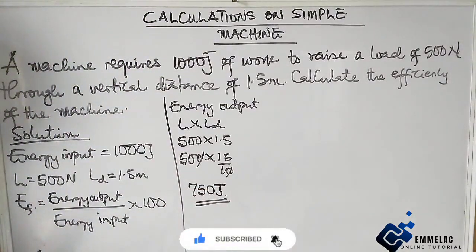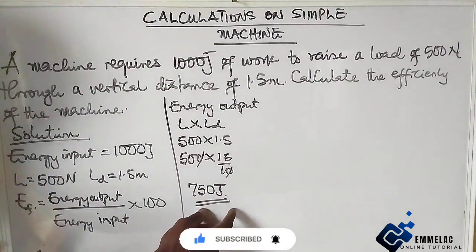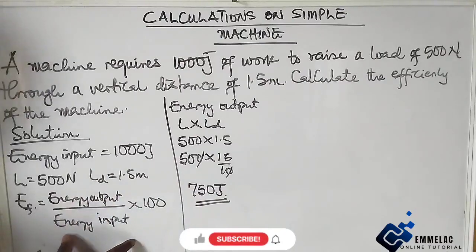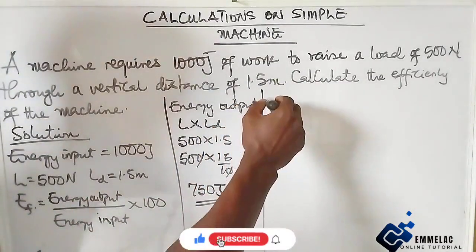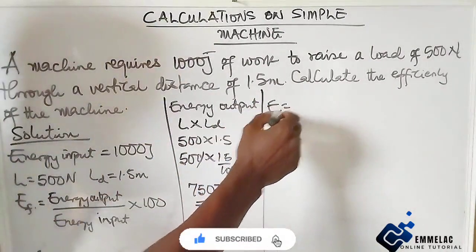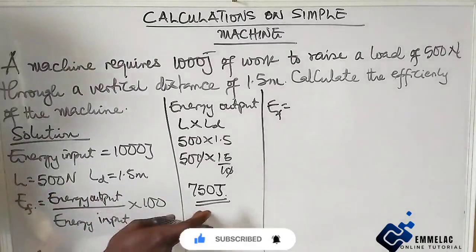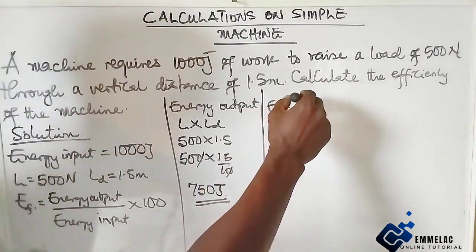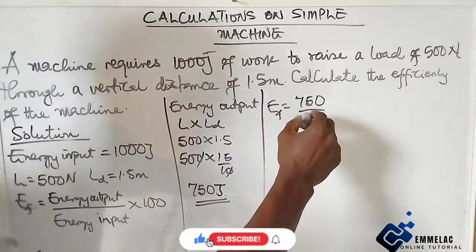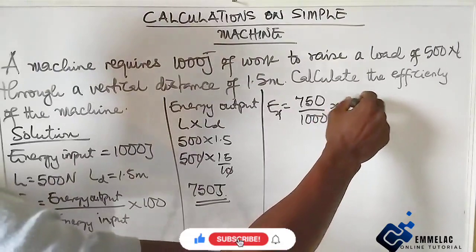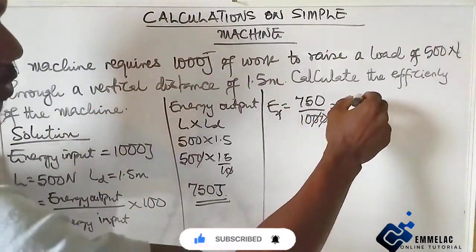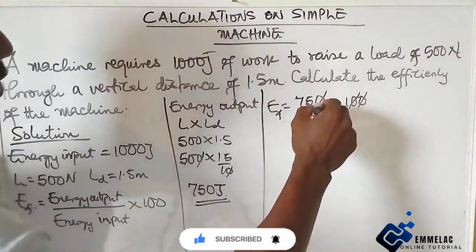Since we have the energy output and energy input, our efficiency will be the energy output, 750, over energy input, 1000, times 100. Canceling the zeros, our efficiency is 75 percent.